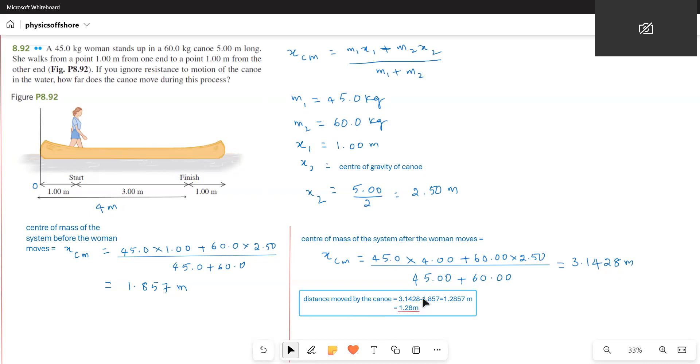The distance moved by the canoe during this period is the difference between the two center of masses. 3.1428 minus 1.857 gives 1.2857, that means 1.28 meters. That is what is being asked. How far does the canoe move during this process? The canoe moves 1.28 meters.